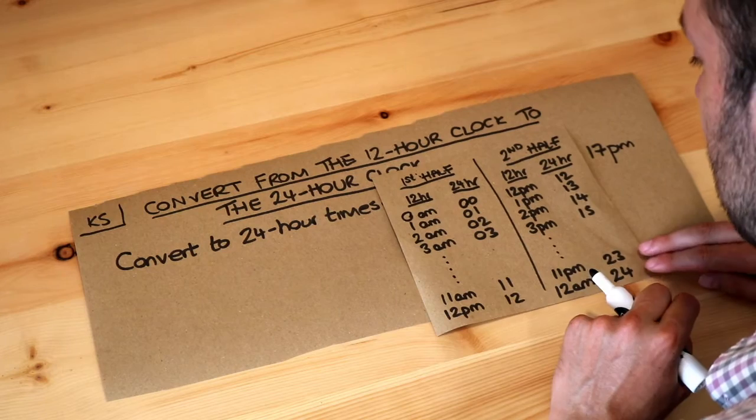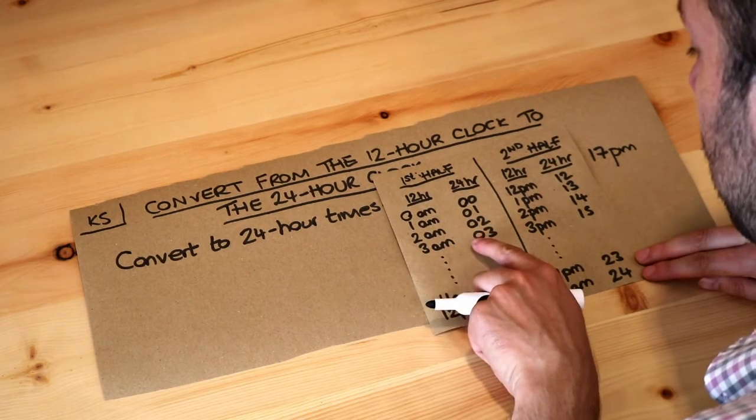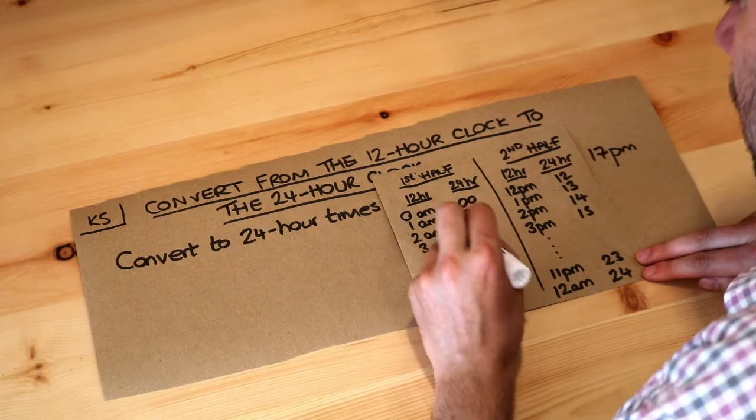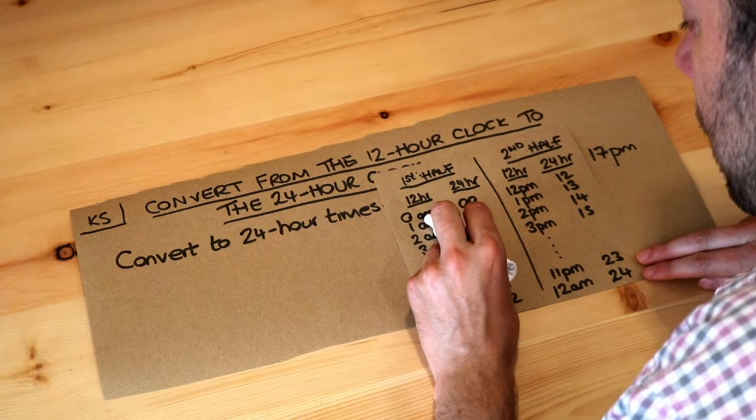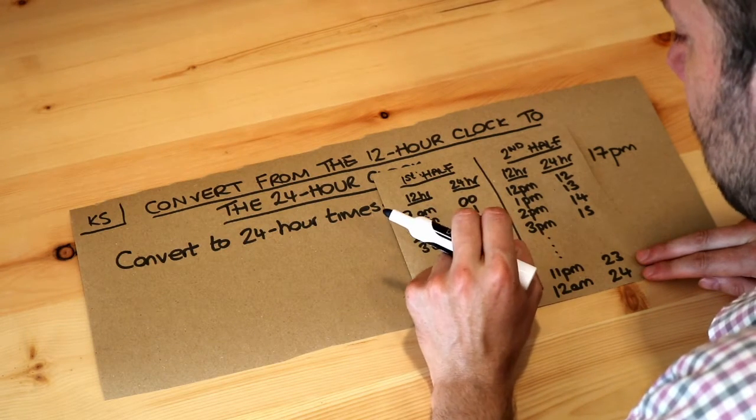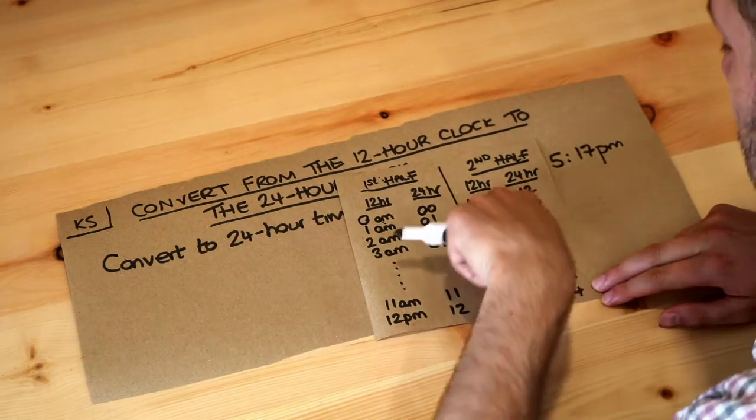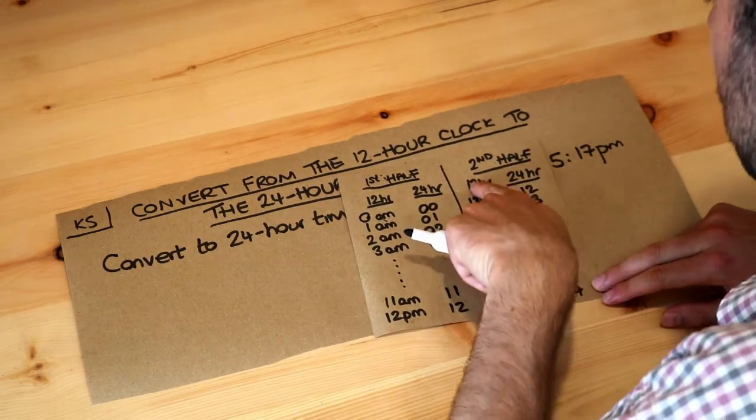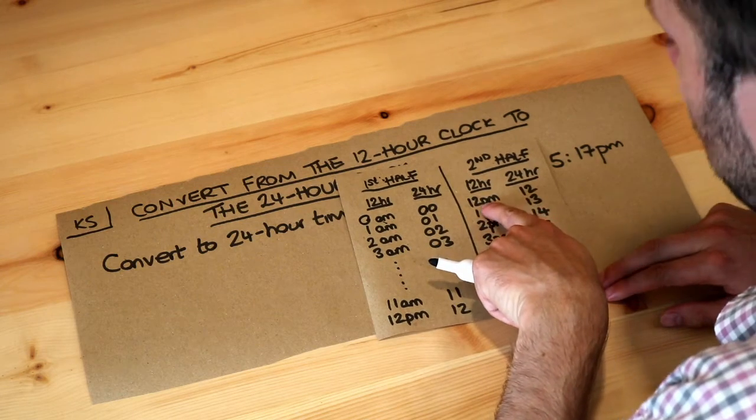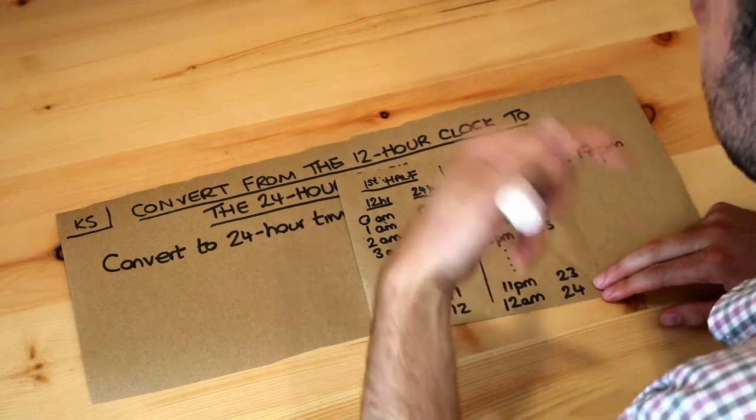With 12-hour clock times, the first half of the day ends with AM. AM means anti-meridian, which means before midday, whereas in the afternoon and evening, the second half of the day, the times on a 12-hour clock end with PM, meaning post-meridian, after noon.